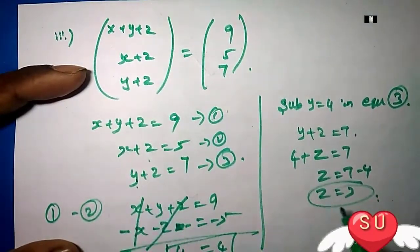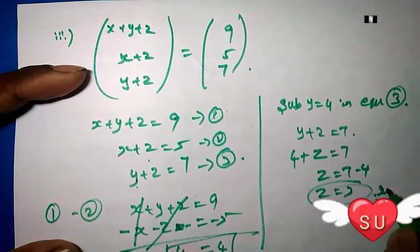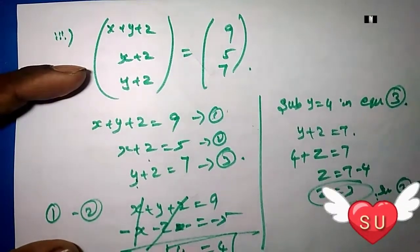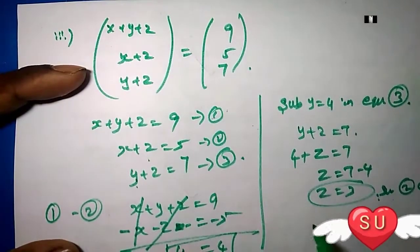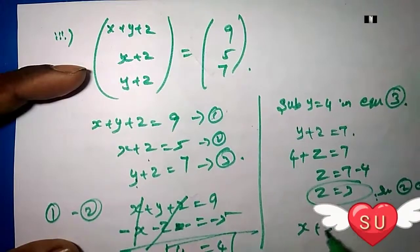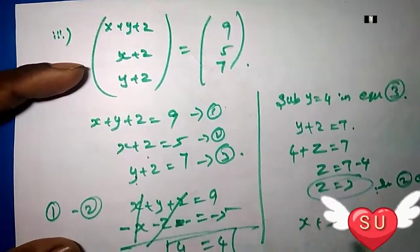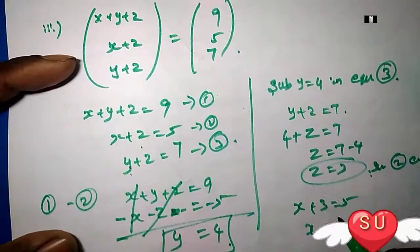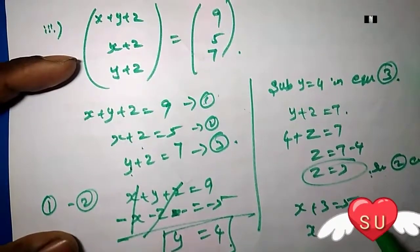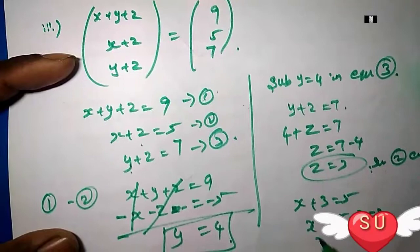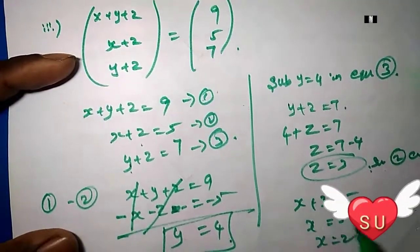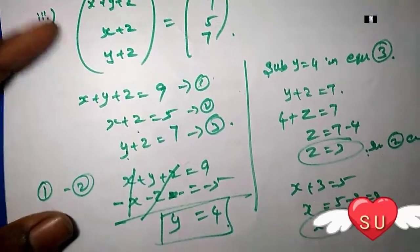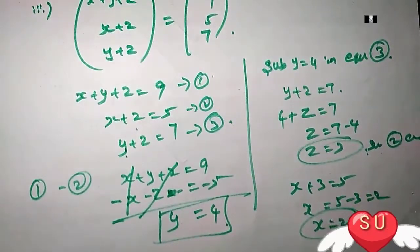Substitute z equals 3 into the second equation. So x plus 3 equals 5, then x equals 5 minus 3, so x equals 2. Therefore x equals 2, y equals 4, z equals 3.